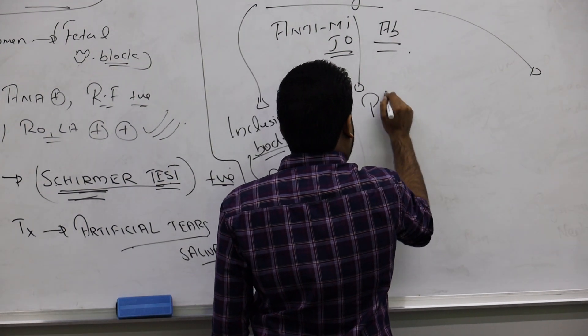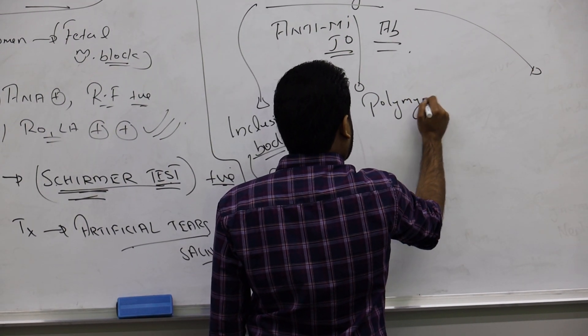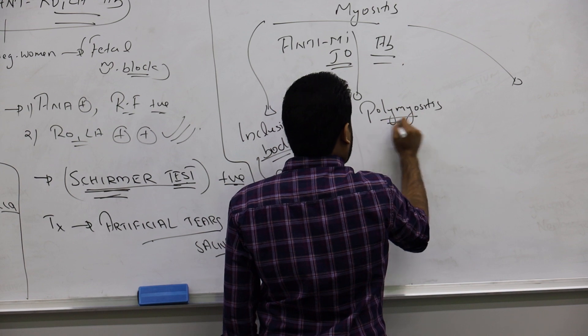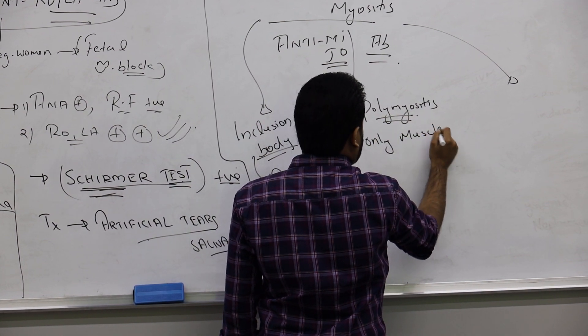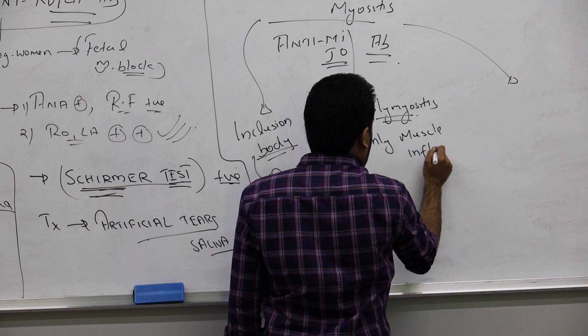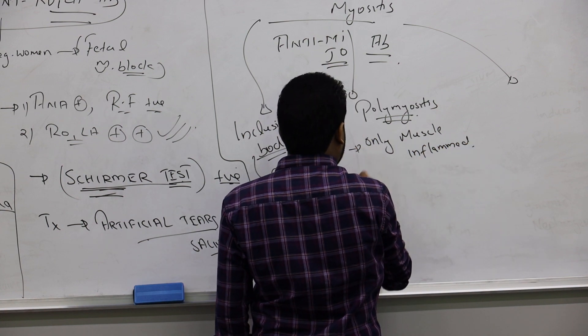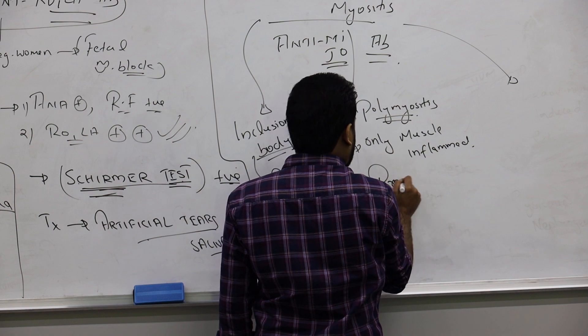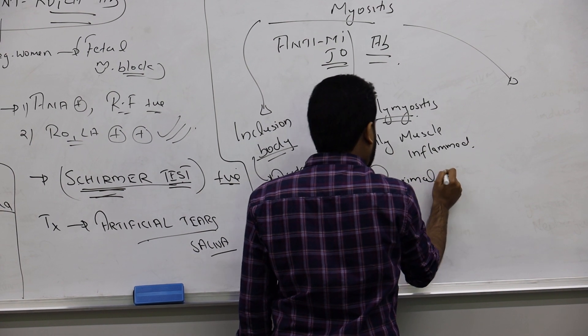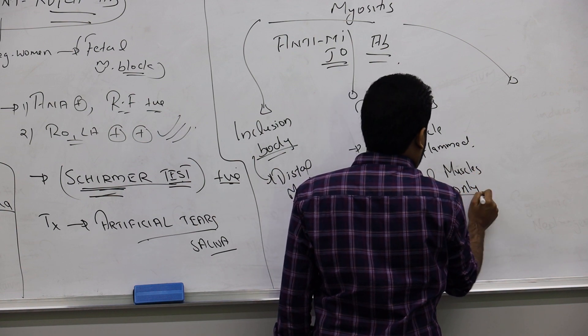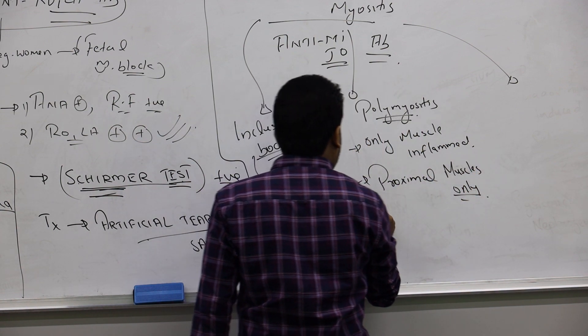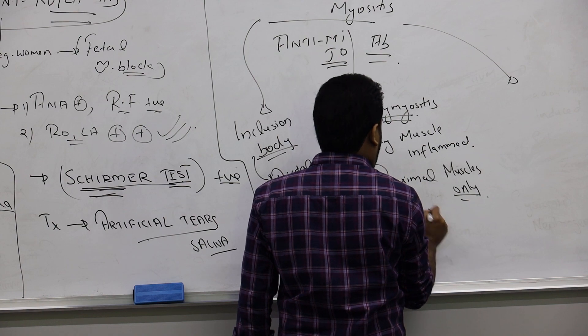Other one is polymyositis. Here only muscle inflamed. Only muscle inflamed. Proximal muscles only. Proximal muscles only inflamed. That is mainly seen in old people.